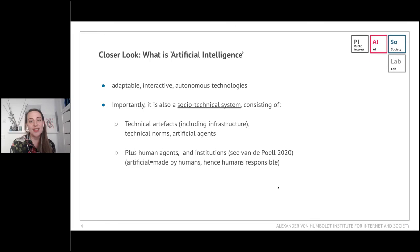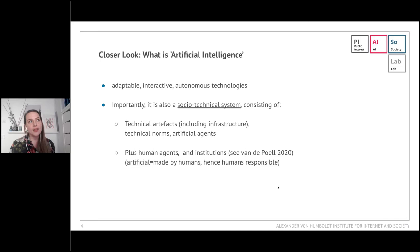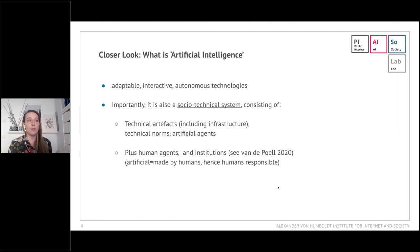First, it's important to clarify what we understand public interest AI to be, and that requires defining what artificial intelligence is, since there are so many definitions. We mean technologies that are adaptable, active, and autonomous to a certain degree. For us, it's very important that AI is a socio-technical system — not only technology but also human factors. It's a technical artifact with technical infrastructure and artificial agents, but also human agents and human institutions involved.